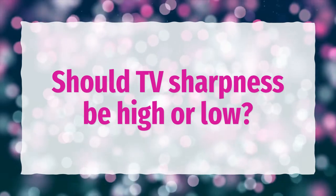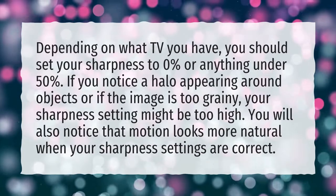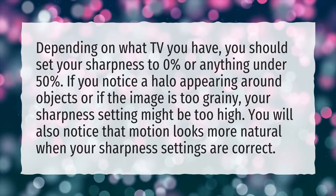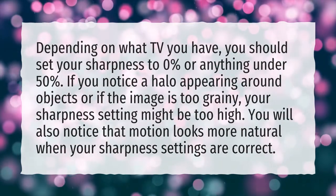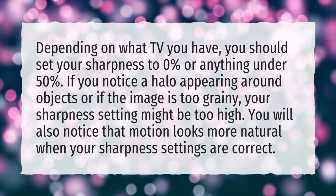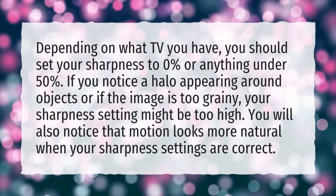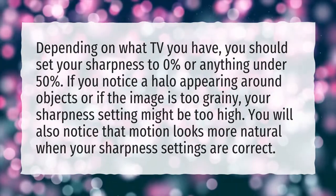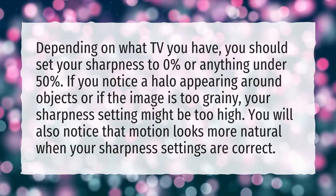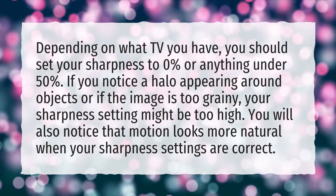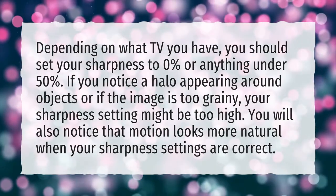Should TV sharpness be high or low? Depending on what TV you have, you should set your sharpness to 0% or anything under 50%. If you notice a halo appearing around objects or if the image is too grainy, your sharpness setting might be too high. You will also notice that motion looks more natural when your sharpness settings are correct.